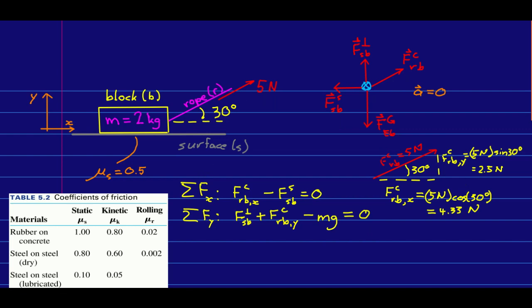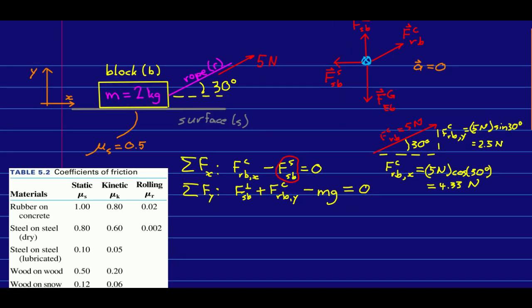And notice if we want to solve for that static friction, which is right here, it's the only unknown in this equation because we know this component of the force due to the rope. And so there we see that we just, as I explained, solve for the static friction out of the equation of motion.